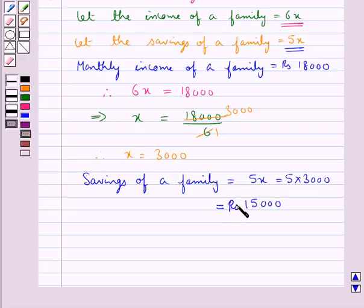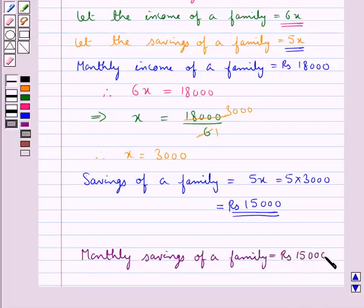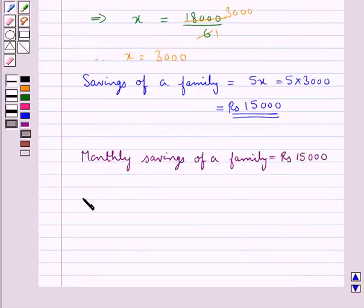Thus the monthly savings of a family is equal to 15,000. Our final answer is: monthly savings of a family is equal to rupees 15,000. So this completes the session. Hope you have understood the solution for this question.